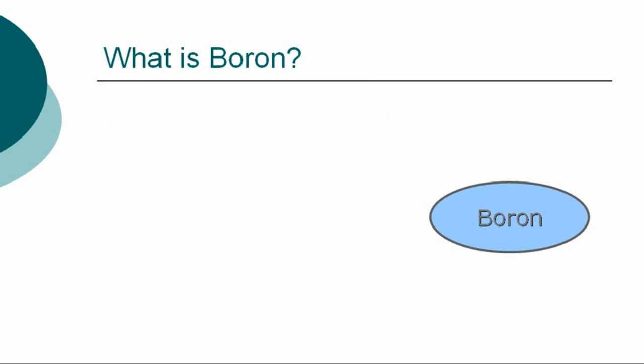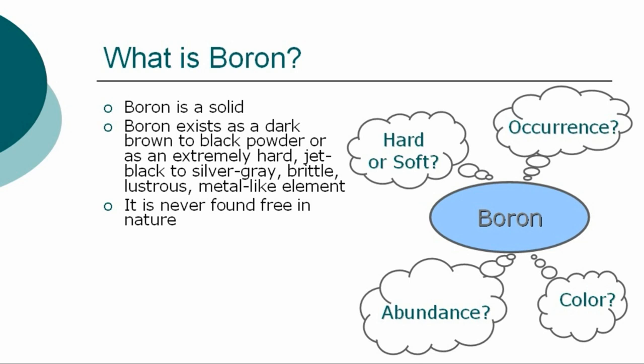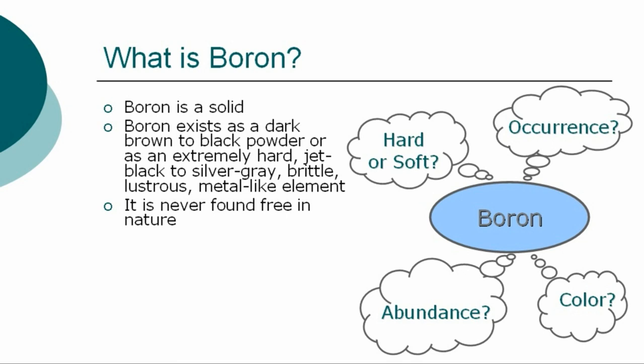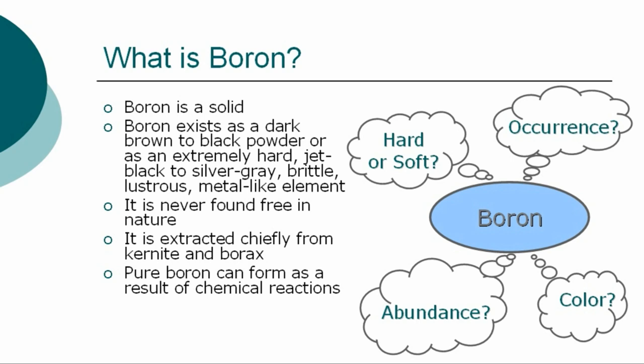What is boron? In a general overview of the element, we can first describe boron as a solid. It exists as a dark brown to black amorphous powder, or as an extremely hard, jet black to silver gray, brittle, lustrous, metal-like element. It is never found free in nature, and is extracted chiefly from kernite and borax. Pure boron can form as a result of chemical reactions.